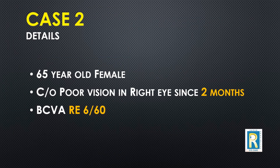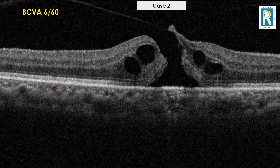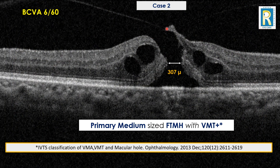The second case was a 65-year-old female who complained of poor vision in her right eye for two months. Her best corrected visual acuity was 6/60. On fundus examination there was clearly a macular hole. The OCT showed persistent vitreomacular attachment — vitreomacular traction was present — and the hole was more than 250 microns in size. This was a case of a primary medium-sized full thickness macular hole with vitreomacular traction.